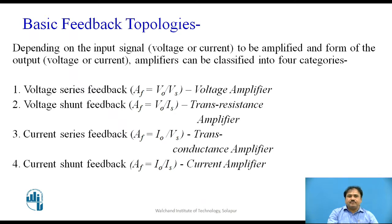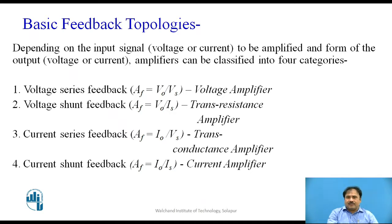Voltage series feedback is also called a voltage amplifier because the gain with feedback is Vo upon Vs, where Vo is the output voltage and Vs is the input supply or signal voltage. The second is voltage shunt feedback, where the feedback quantity is current, so the gain is defined as Vo upon input signal current — also referred to as a transresistance amplifier. Third is current series feedback, also termed a transconductance amplifier. Finally, there is current shunt feedback, also termed a current amplifier.